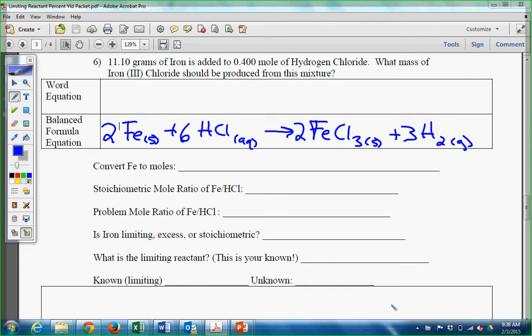Convert Fe to moles. So I have 11.10 grams Fe, and I know that my mass of iron is going to be 55.85 grams of Fe. That's what you should do for the first one. What'd you get? 0.198 mol Fe. Does anybody have a question about that part?